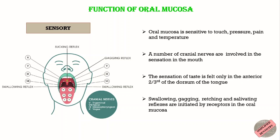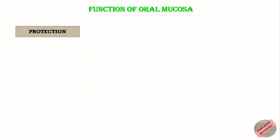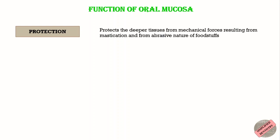Reflexes such as swallowing, gagging, and thirst are also initiated in the mouth. Another main function is protection. The oral mucosa physically protects the underlying tissues from the mechanical forces resulting from mastication and from the abrasive nature of foodstuffs.